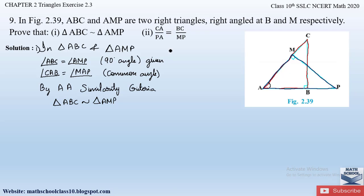That completes the first part. Now let us solve the second part: we have to show that CA/PA = BC/MP. The side CA and PA come from triangle AMP and triangle ABC respectively; similarly BC is from triangle ABC and MP is from triangle AMP. Whenever we prove two triangles to be similar, we also know that the corresponding angles and the proportion of the sides will be equal.